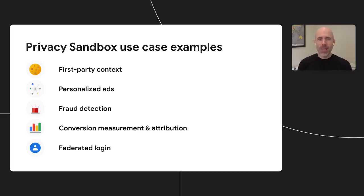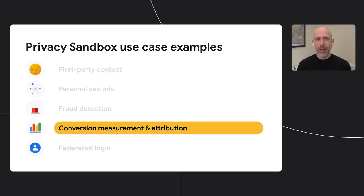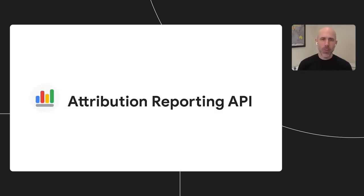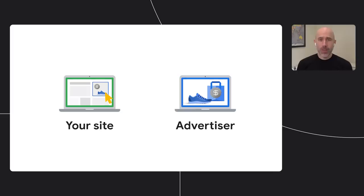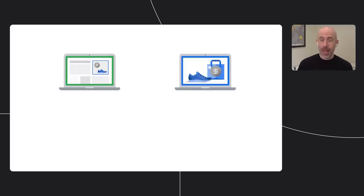We've been collaborating with the ecosystem on a new family of APIs that provide privacy-preserving alternatives to use cases that today rely on third-party cookies, such as federated login, personalized ads, and conversion tracking. Let's take a closer look at one of them — the Attribution Reporting API. A key aspect of any web business is how you grow your user audience, and that often involves advertising to increase traffic. On the other side of those ad dollars, content publishers on the web often rely on revenue from advertisements to make their business model work.